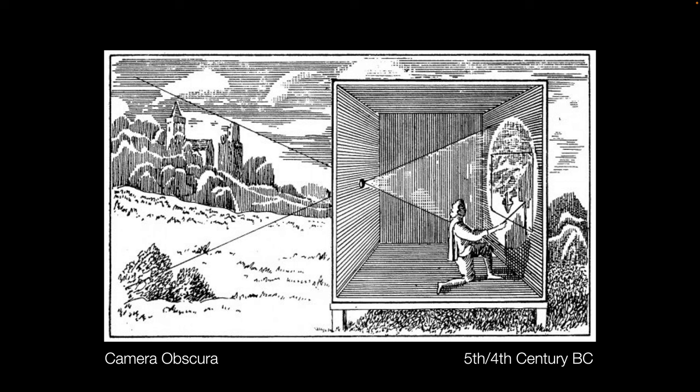It kind of starts off in the 5th, 4th century BC with something called the camera obscura. Artists used these all the time in order to see an image projected into a dark room that they could trace and or paint directly from the projection. Camera obscura literally means dark room — it is just a darkened room with a hole in it that projects the image in.